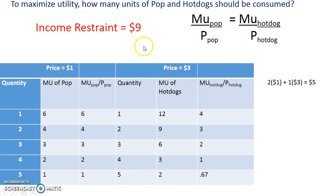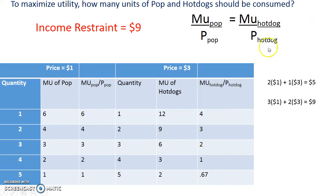While I've satisfied the formula, I have not spent all of the money, so I need to look at the next combination. The next marginal utility per dollar is 3: you have 2 hot dogs and 3 pops. So 3 pops times $1 plus 2 hot dogs times $3 satisfies not only the marginal utility per dollar formula, but also spends all of your money. To maximize utility, you want 3 pops and 2 hot dogs.